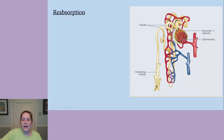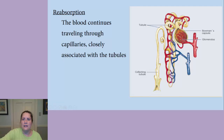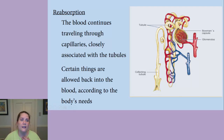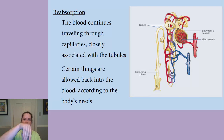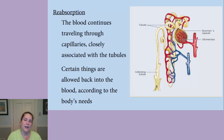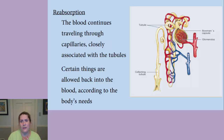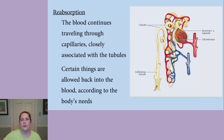The blood continues through these capillaries, very closely associated with a tubule that carries all that squeezed-out material, which we call filtrate. Certain things are allowed back into the blood and other things aren't. As they travel side by side, the blood decides what it wants to take from that filtrate and leaves what it doesn't need. This depends on the body's needs — what's the pH of the blood, do we need ions in or out, what's the blood volume, do we need more water or less?